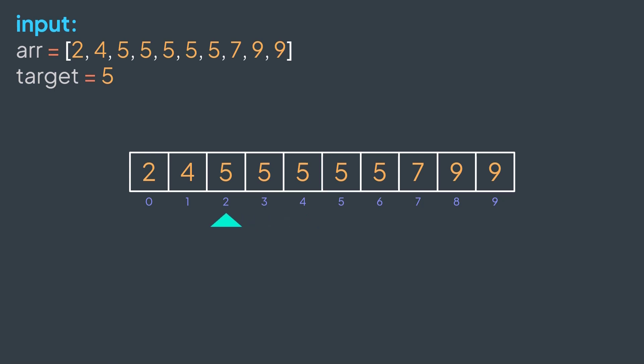i is the first position of target if r[i] is equal to target, obviously, but also r[i-1] has to be smaller than target — smaller because the array is sorted. So we will use binary search normally, but we add that second condition before returning mid.